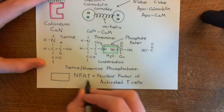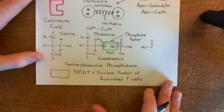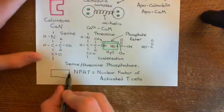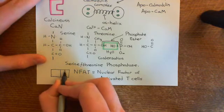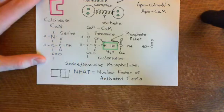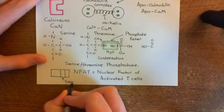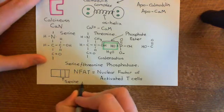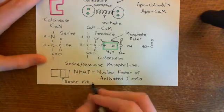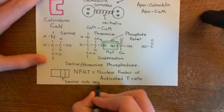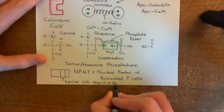NF is for Nuclear Factor, A is for Activated, and T is for T Cells. Here is the Nuclear Factor of Activated T Cells, and at the moment it's stuck in the cytoplasm. The reason it's stuck in the cytoplasm is that it has a region known as the serine-rich region, which has a huge number of serine amino acids within it — also known as the SRR for short.